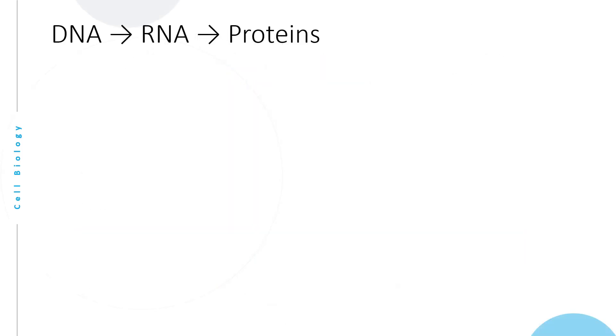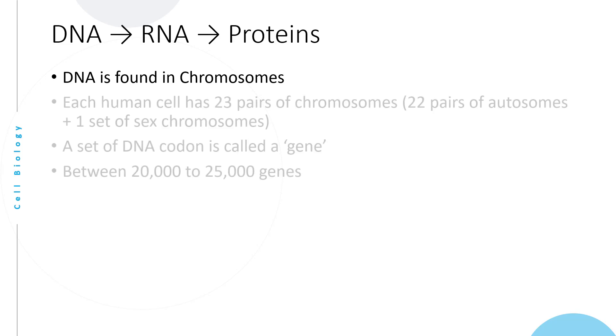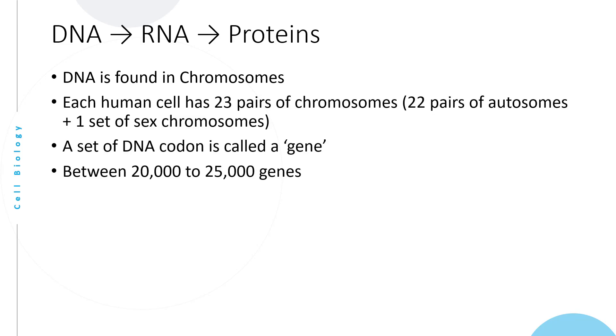Before we look at other organelles, let me share with you the central dogma of molecular biology. Remember, we spoke about DNA earlier and how it is duplicated and an exact copy passed down to daughter cells during cell division. DNA is the genetic code containing all information required to sustain life. DNA is found in chromosomes within the nucleus. Each human cell has 23 pairs of chromosomes: 22 autosomes and one set of sex chromosomes.